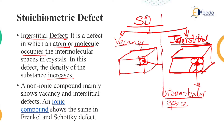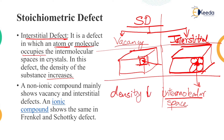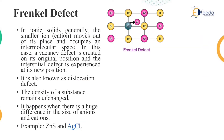A non-ionic compound mainly shows vacancy and interstitial defects. An ionic compound shows the same in Frenkel and Schottky defect. In ionic compounds, the same kinds of defects are named as Frenkel defect and Schottky defect — these three kinds of defects are all interrelated.